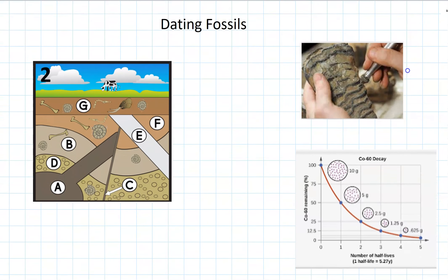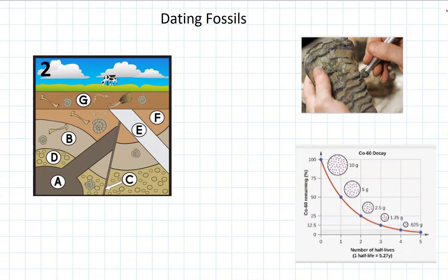The other useful thing about fossils, other than proving what a species looked like, is we can find out when that species was actually living — we call that dating a fossil. There are two main ways: the first is relative dating, which is not very accurate, and the other method is absolute dating, which is much more accurate and gives us an actual period of time when that fossil was made.